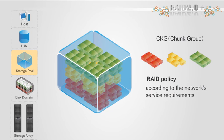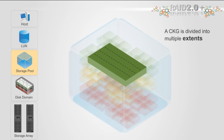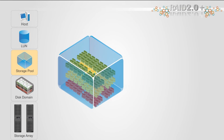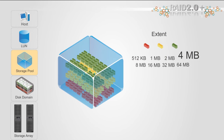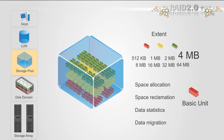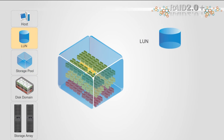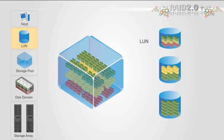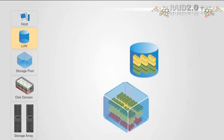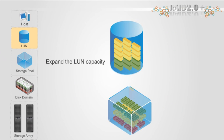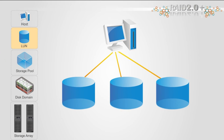Users can choose an appropriate RAID policy for a CKG according to the network's service requirements. In a storage pool, a CKG is divided into multiple extents. An extent is a logical space smaller than a CK. The size of an extent is not fixed and can be adjusted; the default size is 4 megabytes. An extent is the basic unit for space allocation, space reclamation, data statistics, and data migration. In a storage pool, users can create multiple LUNs, and each LUN consists of multiple extents. The extents of one LUN can be of the same type or of different types. Users can adjust the capacity of a LUN dynamically according to service requirements. If the initial allocated capacity does not meet requirements, users can apply for new extents to expand the LUN capacity. Storage space in the storage system is mapped to hosts by LUNs.